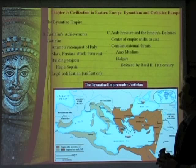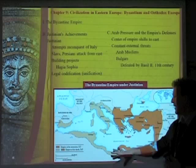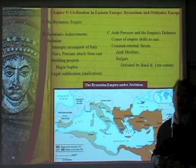Arab pressure and empire defenses: Eventually they have a hard time holding their borders as the Arabs push into North Africa and into Asia Minor areas to the north, threatening their border areas.